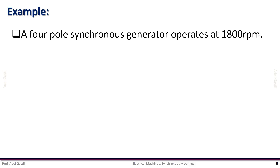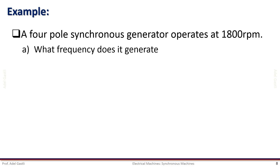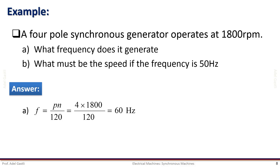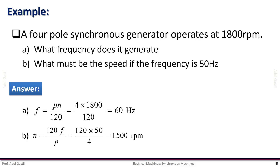Let's consider an example of a four-pole synchronous generator operating at 1800 RPM. We need to find the frequency of the generator voltage, and the rotor speed that gives a frequency of 50 Hz. Using the frequency equation and substituting the number of poles and speed, we find that at 1800 RPM the frequency is 60 Hz. If the frequency is 50 Hz, the speed should be 1500 RPM, calculated as shown.